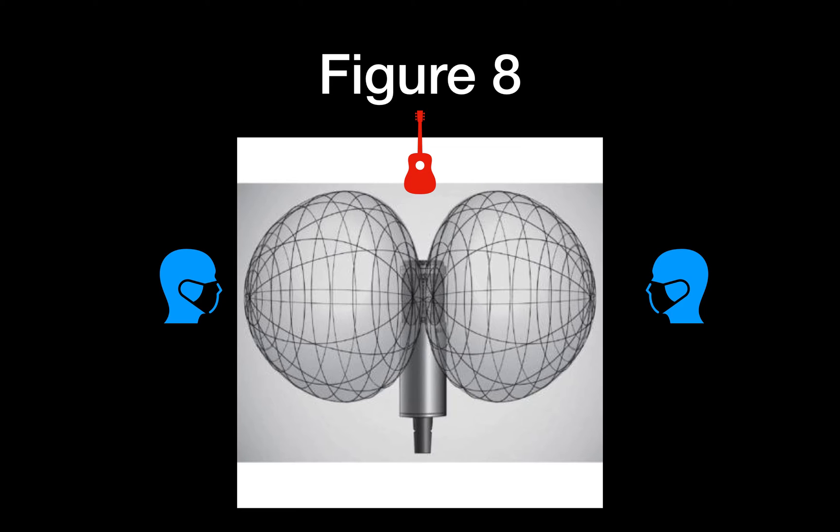Another really good thing about figure eight microphone is that it rejects sound from the sides. So it's not good at picking up sounds from the side. So in this scenario I've got two singers and a guitarist. Now if I wanted to capture the sound from the two singers but I didn't want any spill or bleed from the guitar to get into the microphone, then I could place the guitarist on the side of that microphone and then the microphone would ignore the sound coming from the guitar.